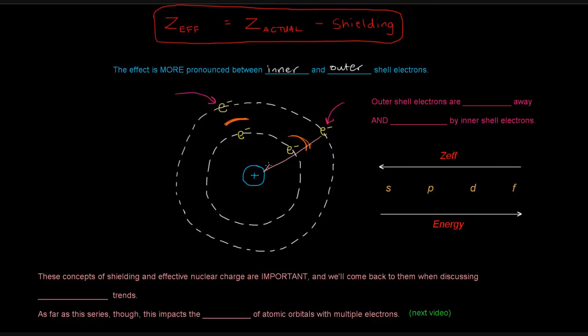And these guys on the inner shell are actually blocking the electrons out here from being felt by the nucleus. Or these electrons aren't able to feel the entirety of this positive charge in the nucleus because these electrons are blocking them out. So what's happening is that the outer shell electrons are repelled away and shielded by the inner shell electrons.